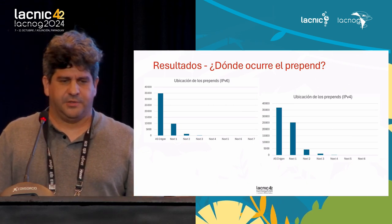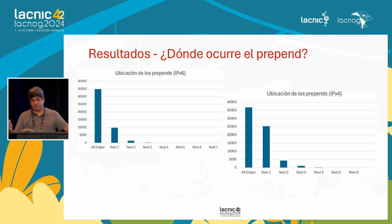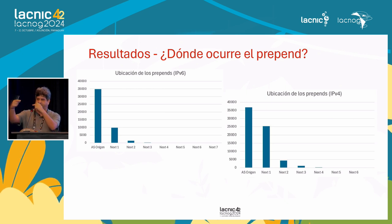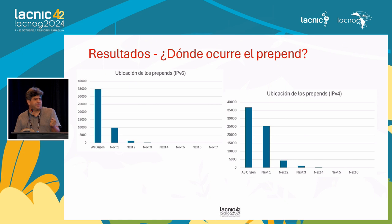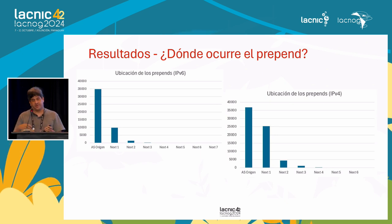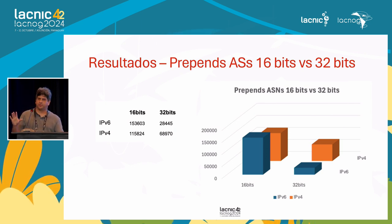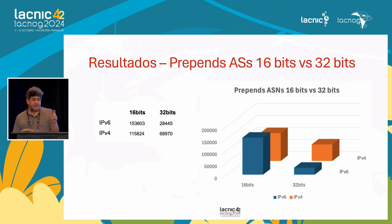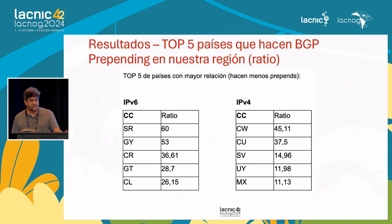If you wonder where prepends are done, there are not many surprises: most are done at the AS of origin. We also analyzed the upstream provider position in the path. It may be interesting to note that some operators may add prepends to your advertisement, which will impact your traffic. We also compared prepends in 32-bit versus 16-bit autonomous systems: in the 32-bit world there are more prepends in IPv4, while in the 16-bit world there are more prepends in IPv6. That's a curiosity worth further analysis.